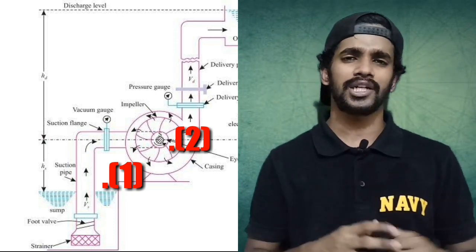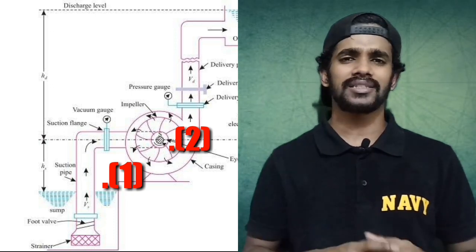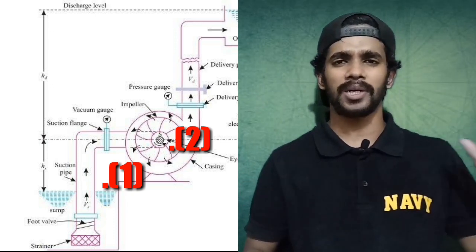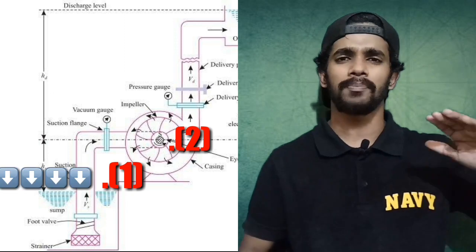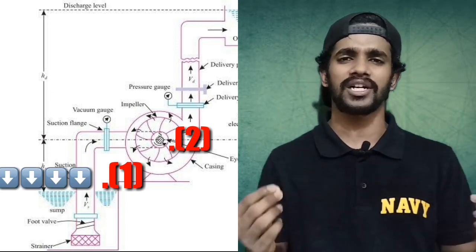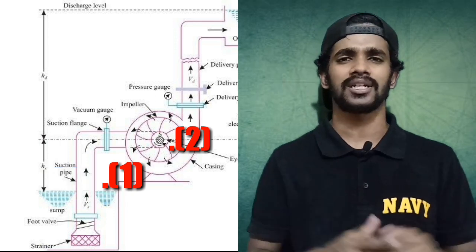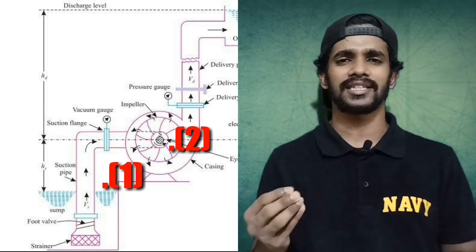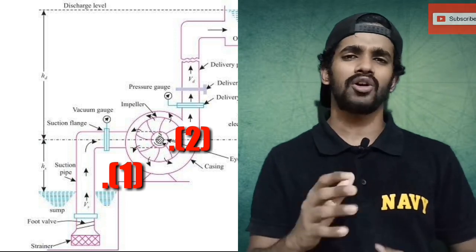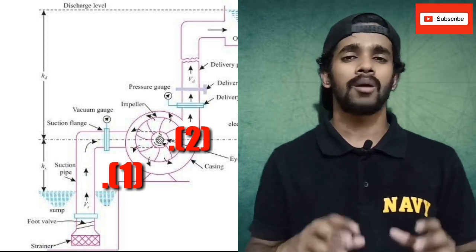As we already know, the pump takes suction due to the pressure difference. At the eye of the impeller there is negative pressure, because of which the atmospheric pressure — being the higher pressure side — will push the water towards the eye of the impeller. We have already discussed this process in our previous video. Now we will apply Bernoulli's equation at Point 1 and Point 2.